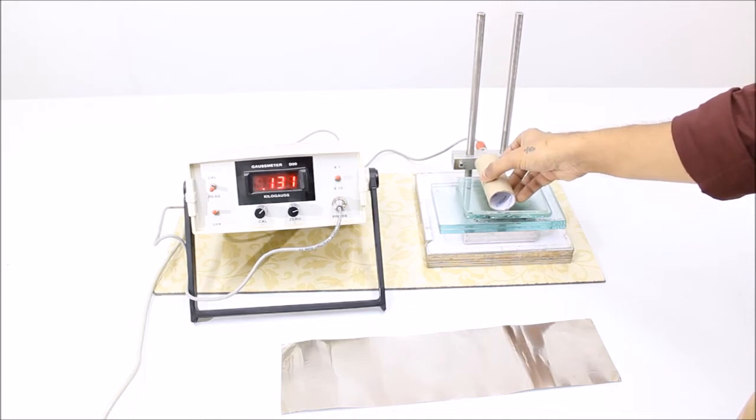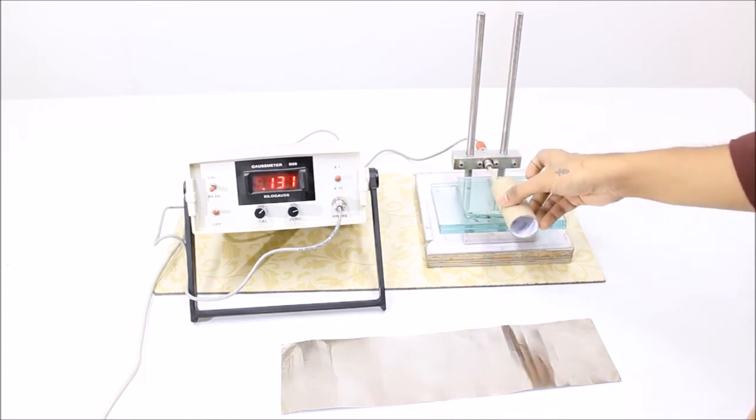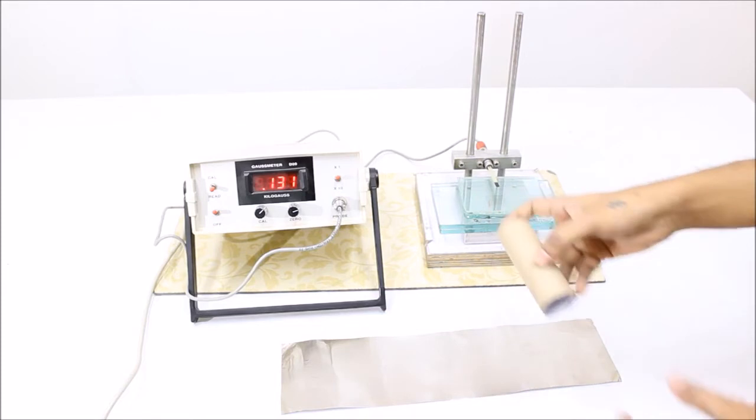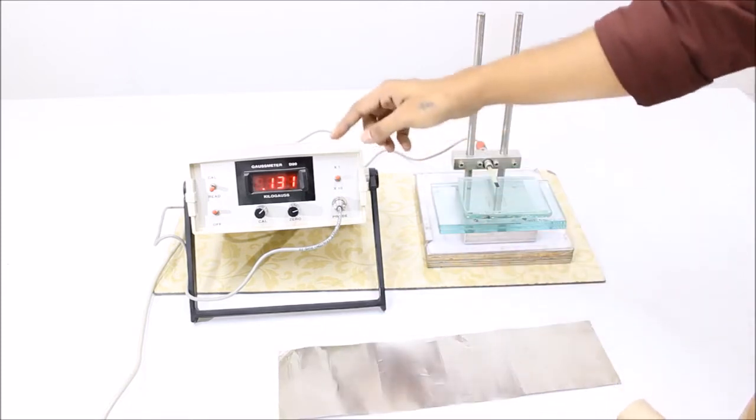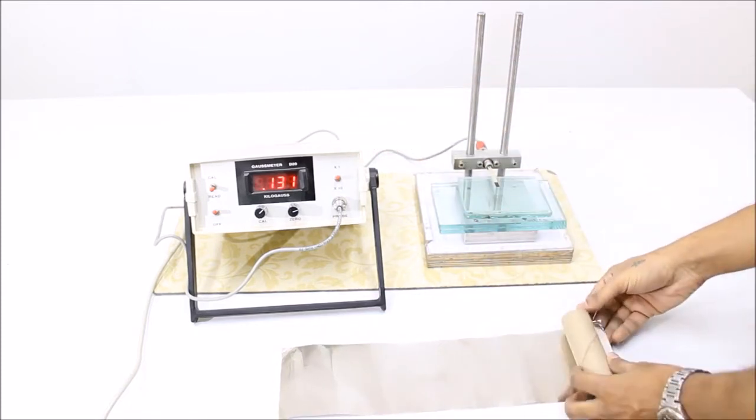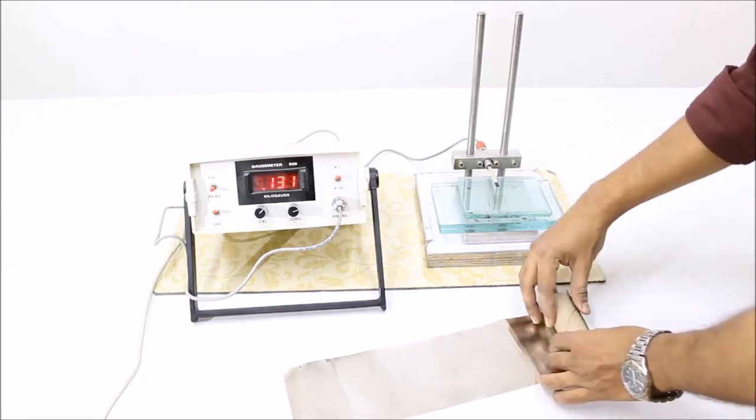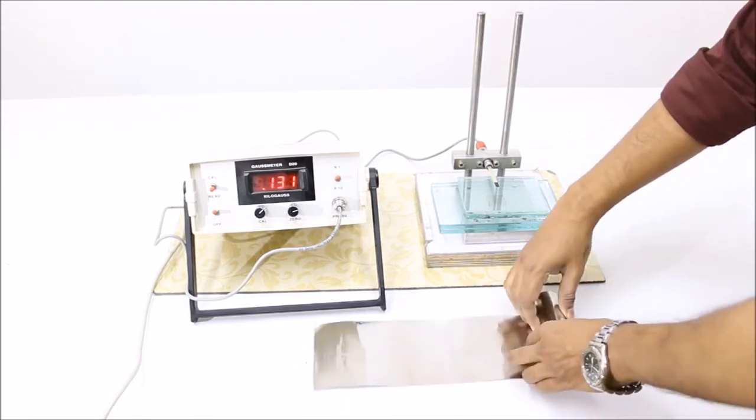As you see, when I place it in front of the hall probe, there won't be any deflection in the reading. Currently it is set at 130 gauss. Now I shall wrap this MU-Metal Foil around the barrel.